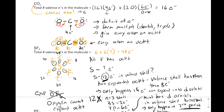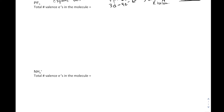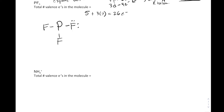Moving on to our next example: PF3. We have our phosphorus surrounded by three fluorines. To find the total number of valence electrons, we have five for phosphorus and three times seven for fluorine, giving us 26 electrons.